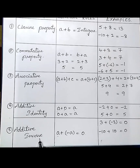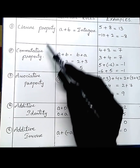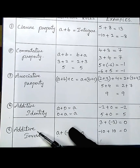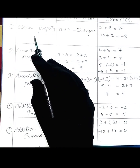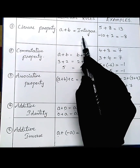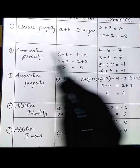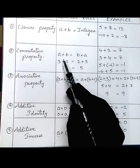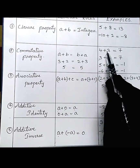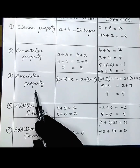Hope you understood all these properties. We have five properties under addition: closure property, commutative property, associative property, additive identity, and additive inverse. Under closure property, if you add two integers you get an integer — like 5 plus 8 equals 13, which is also an integer. In commutative property, a plus b equals b plus a — like 4 plus 3 equals 7, or 3 plus 4 also equals 7.